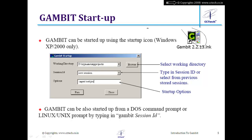If you double-click the icon, a window opens where you must specify the working directory, session ID, and options. The working directory is where GAMBIT will store its files. The session ID is like a project name — similar to giving a filename in MS Word — and this name is common to all associated files.